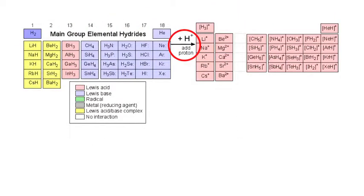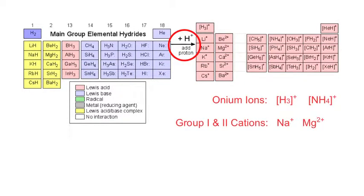Starting by adding H+ — adding a proton to our main group elemental hydrides gives a large group of species. Hydrogen H2 reacts to give the H3+ ion. A saline hydride such as sodium hydride reacts to give Na+. The Lewis bases react to give the conjugate Brønsted acid; for example, H2O reacts to give H3O+. So we get the common onium ions H3+, NH4+, and also the group 1 and 2 cations Na+ and Mg2+.